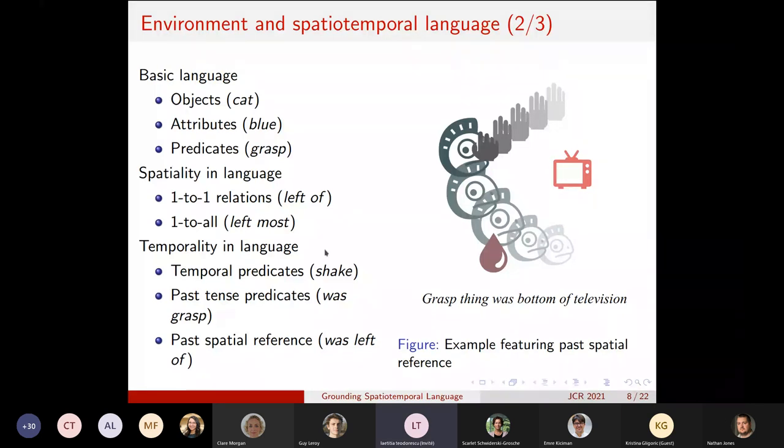And finally, and this is important, the temporal aspect in our language is represented by three things. Firstly, the temporal predicates that we consider, such as shaking and growing, can only be decided by looking at the temporal evolution of the objects over time. And the second aspect of the temporality we consider in our language is putting predicates to the past. So this is realized in the language by adding the 'was' token before the verb to indicate that the given action has been taking place in the past.